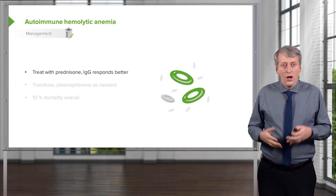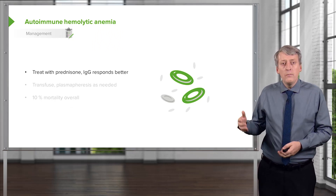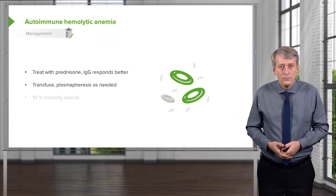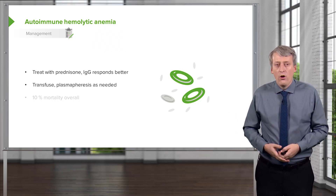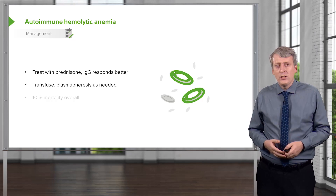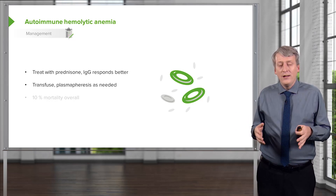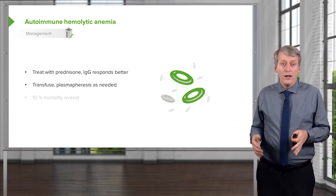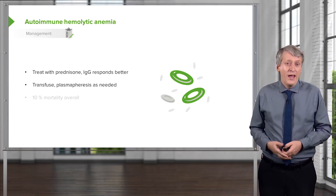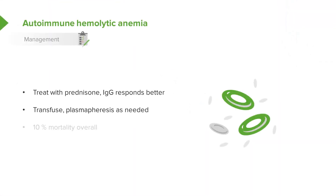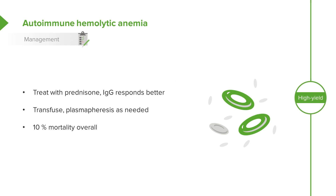The IgG-mediated autoimmune hemolytic anemia will respond a little bit better to steroids than the IgM will. If patients get very bad off, we will need to transfuse, and care must be taken because we have to transfuse blood for which they are not producing antibodies — we'll use the indirect Coombs to figure that out. In worst case scenarios, if we can't find a compatible blood type, we may need to do plasmapheresis to try and remove those antibodies. Overall, the mortality of this condition is around 10%, but many patients will recover without too many problems.